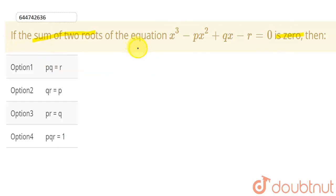So it means this equation will have three roots. Let's say these roots are alpha, beta and gamma. And we have given sum of two roots is zero. So I can write this as alpha plus beta is equal to zero.